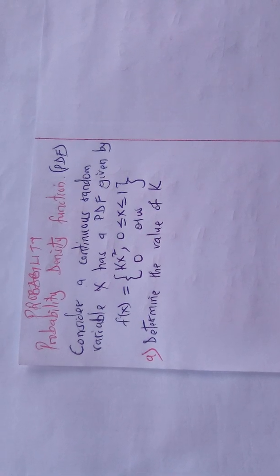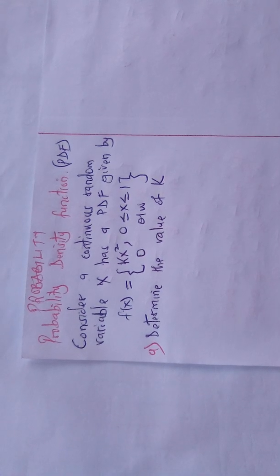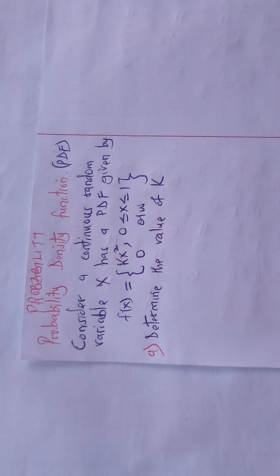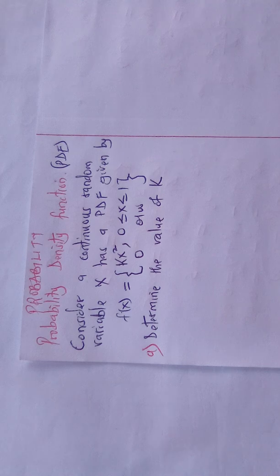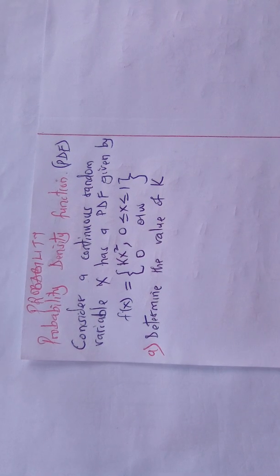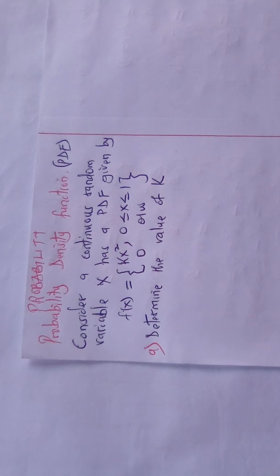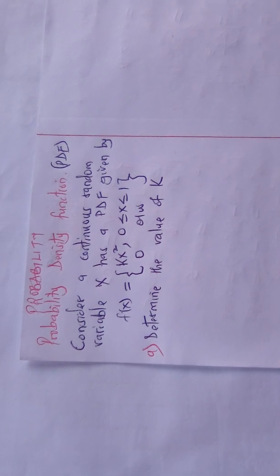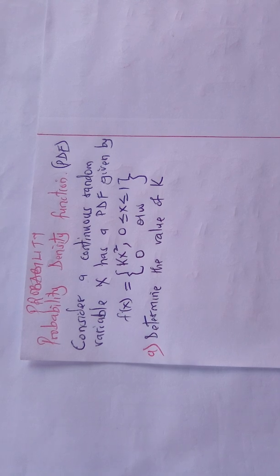Welcome to today's class. Today I want to discuss probability, specifically the probability density function, the so-called PDF. Consider a continuous random variable X with PDF given by f(x) = kx squared for 0 ≤ x ≤ 1, and 0 otherwise. The first question is: determine the value of k.